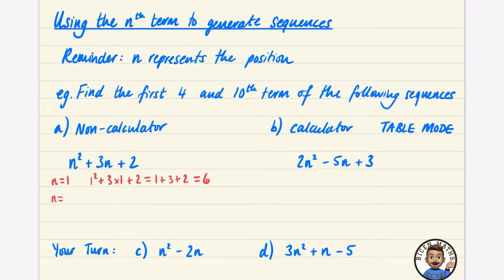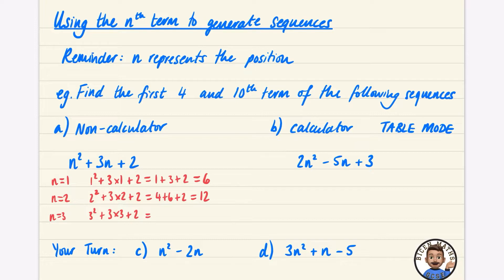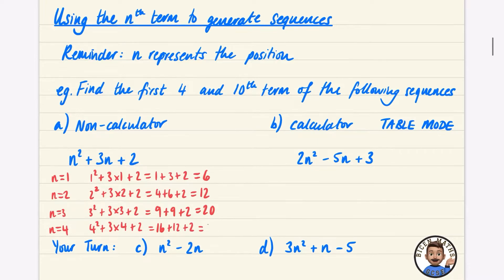The next term is when n equals two: two squared plus three times two plus two, which is four plus six plus two — that's twelve. For n equals three: three squared plus three times three plus two gives nine plus nine plus two — that's twenty. When n equals four: four squared plus three times four plus two gives sixteen plus twelve plus two, which is thirty.